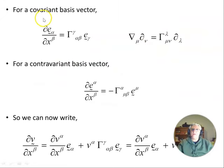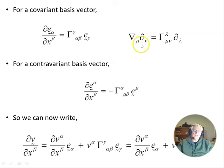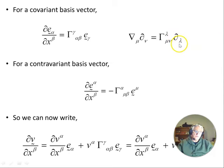For a covariant basis vector e_α, the change in that basis vector is given by the Christoffel symbol of the second kind. The partial derivative of the basis vectors equals the Christoffel symbol Γ^λ_μν times the basis vector ∂_λ. For a contravariant basis vector, a similar expression holds with a minus sign.